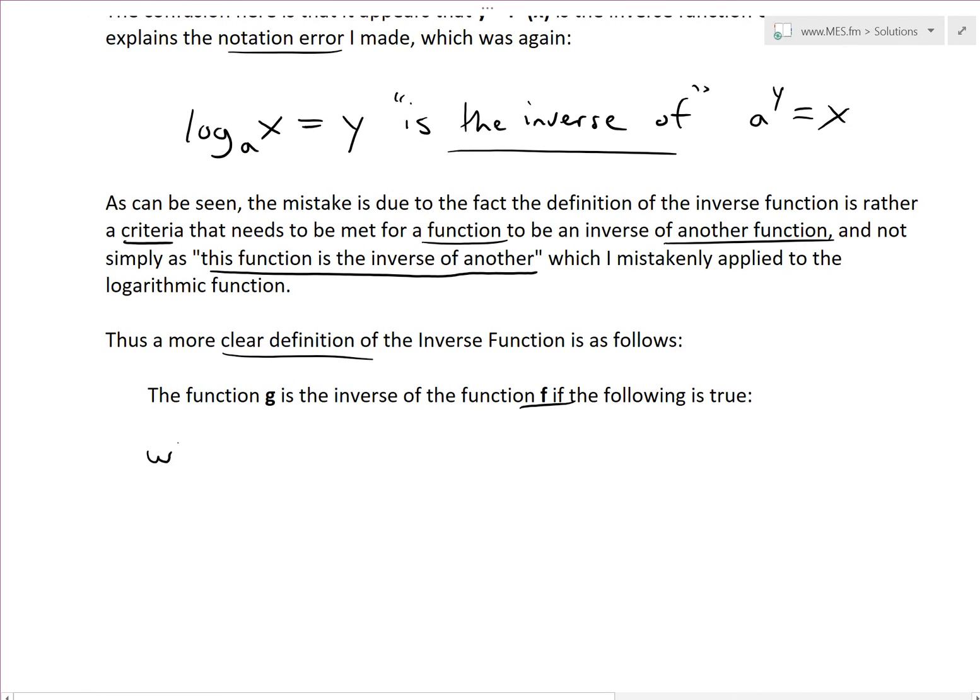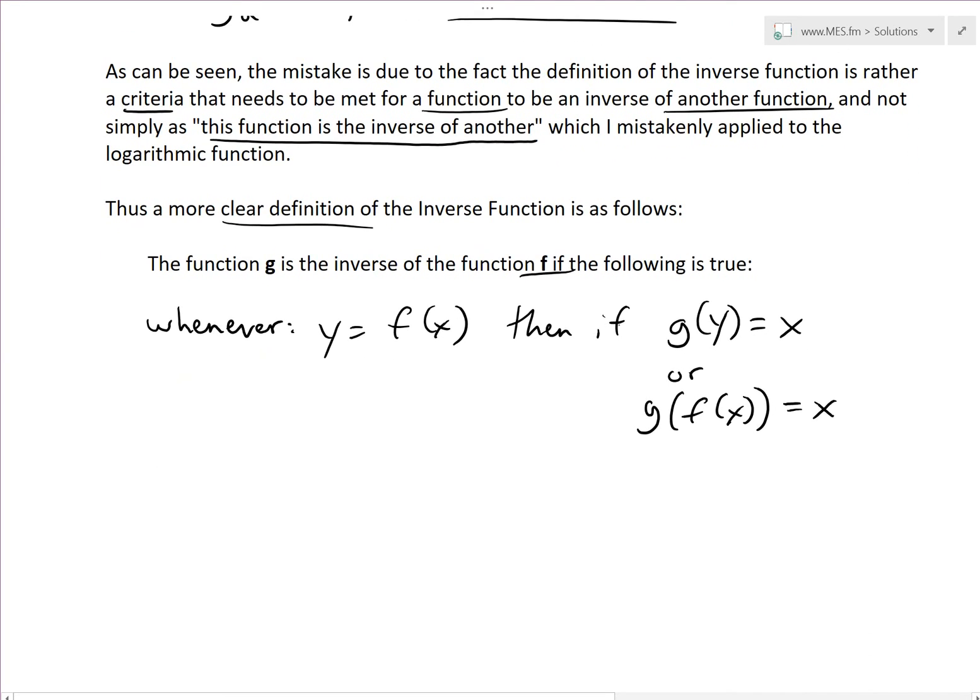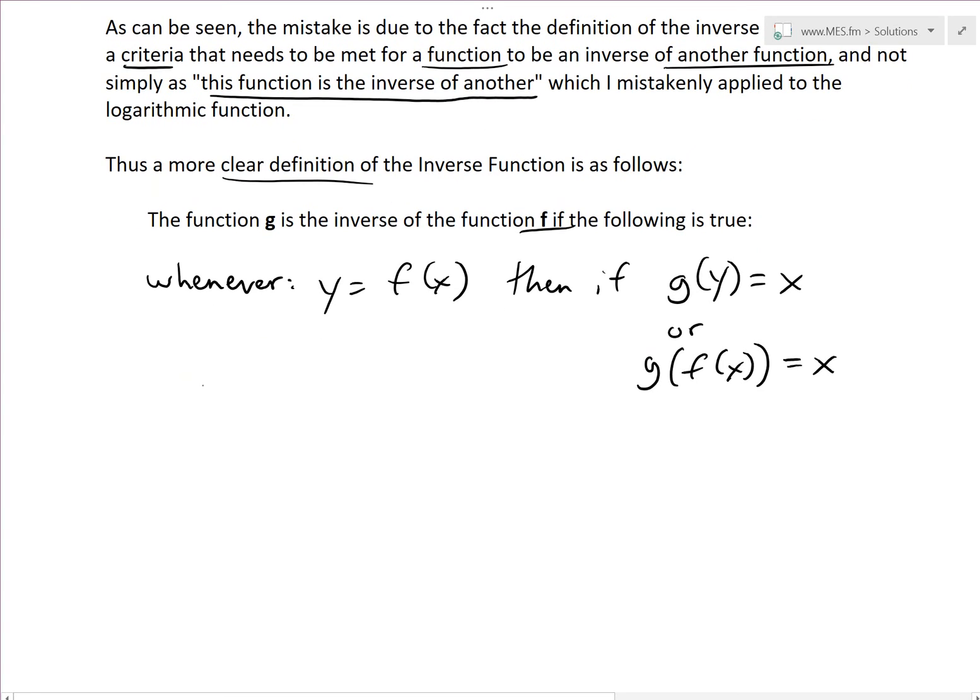So whenever we have y equals to f of x, and then if we get g of y equals to x, or you could write it as g of f of x equals to x. So what we're doing is inverting the y and x. So if this occurs, then the function g of x is equal to the inverse function of x. And this is basically the inverse of the function f of x.